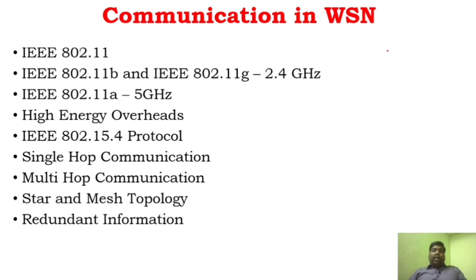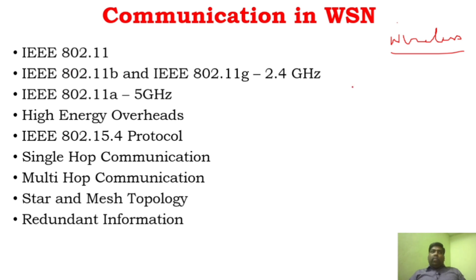Before that, in wireless sensor networks, we've already seen that communication can take place only through wireless medium. And if it is wireless medium, there will be a lot of challenges and problems in wireless communication. The predominantly used wireless standard for wireless transmission is IEEE 802.11, which was established in 1997. You would have studied this in computer networks. IEEE 802.11 is the wireless standard that standardizes wireless communication, and this standard is very important.